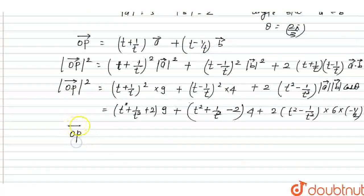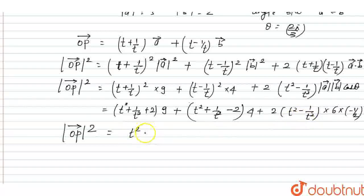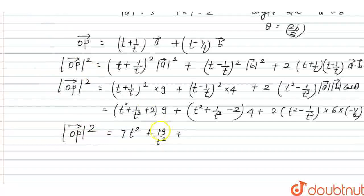When we expand and solve all the terms involving t², 1/t², and the constant terms, the value of |OP|² can be written as 7t² + 19/t² + 10.